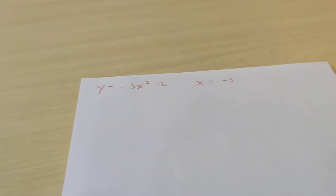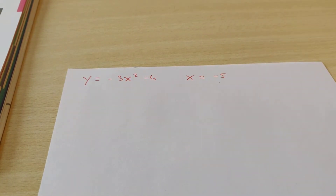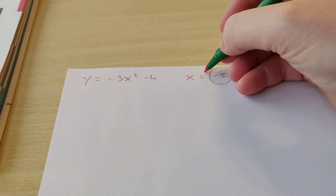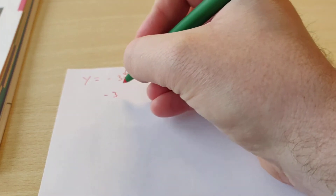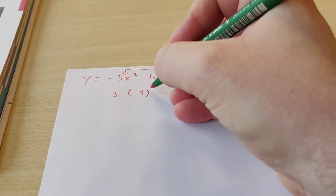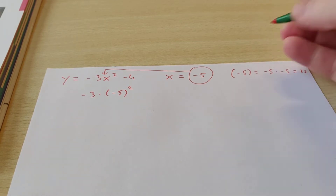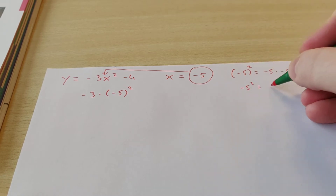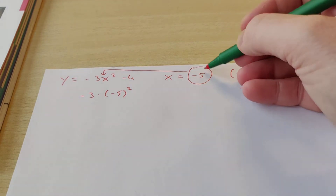I'm going to tell you how to do that. I'll write in red here. This is the formula: minus 3 times x squared minus 4. Now we know that x is minus 5, so we fill that in. Something important you should remember is that if x is negative, you have to put it in brackets when you square it. Because minus 5 squared in brackets gives minus 5 times minus 5, which is 25. But if you forget the brackets, then it's minus 5 times 5, which is minus 25. So this is where it goes wrong — when x is negative, you have to put it in brackets.